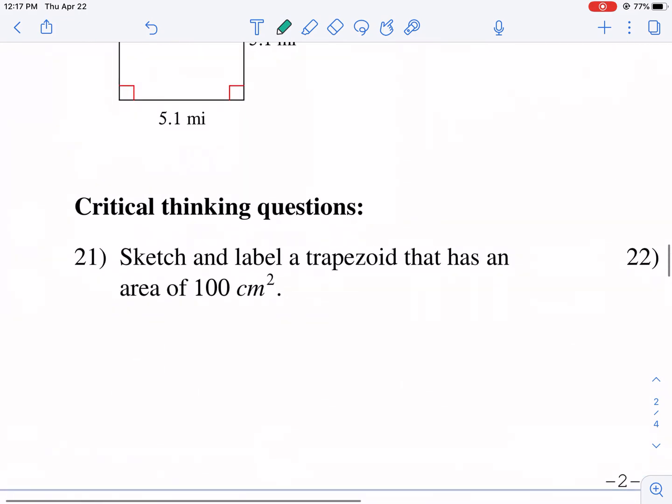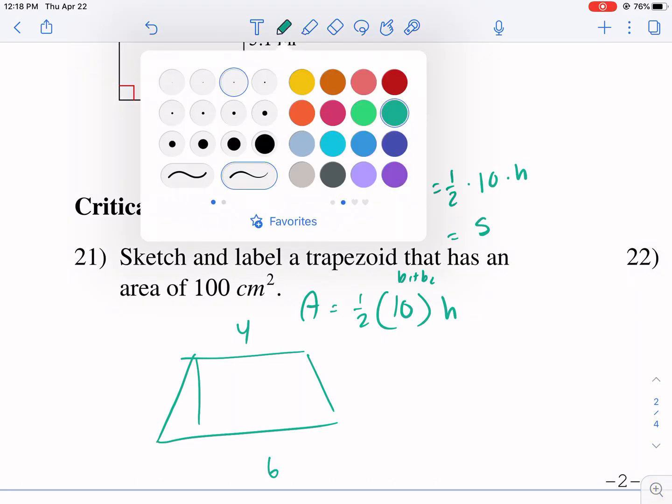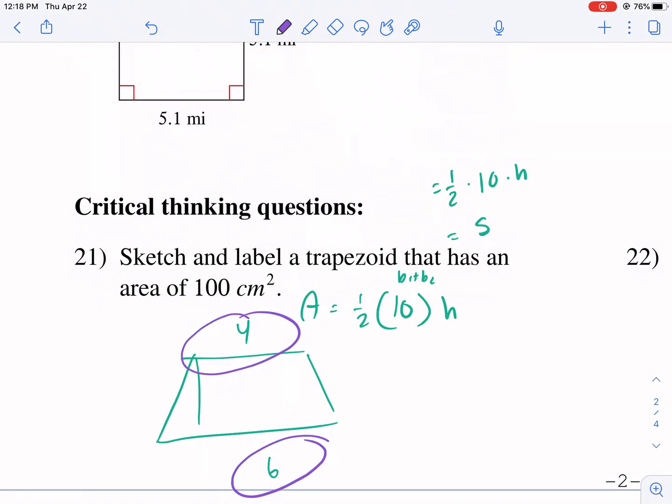Sketch and label a trapezoid that has an area of 100 centimeters squared is our critical thinking question. I'm going to try to get something that has, let's go 4 for this base, 6 for this base, and the height. So I have a base 1 and a base 2 to add up. Base 1 plus base 2 adds up to 10. That's important because now I can figure out what I need my height to be. And then I have to multiply that by half to get my area. So I have area equals 1 half times 10 times my height. So that's 5 equals 100. So I want this to be equal to 100. I'm just trying to make it simple. I thought a base 1 plus base 2 equaling 10 would be helpful.